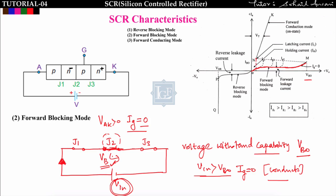However, turning on the SCR by exceeding the breakover voltage is not a safe practice, because it physically breaks junction J2. Repeating this 4 to 5 times will damage the SCR. So although the SCR can turn on this way, it is not the recommended method.